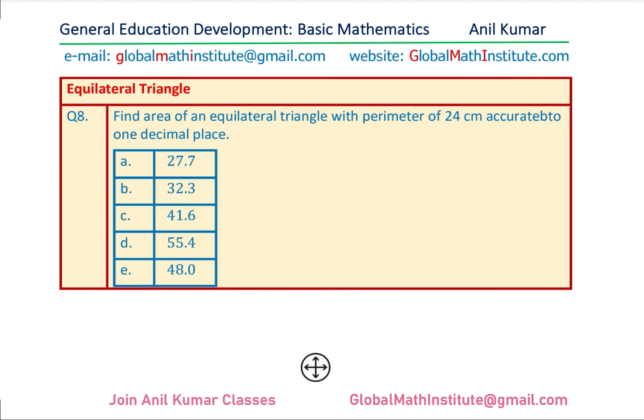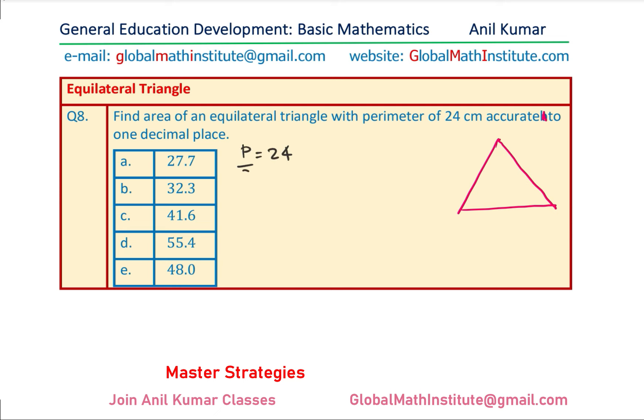Question 8: Find the area of an equilateral triangle with a perimeter of 24 centimeters, accurate to one decimal place. We may need a calculator here. Since all sides of an equilateral triangle are equal, each side is 24 ÷ 3 = 8 units.